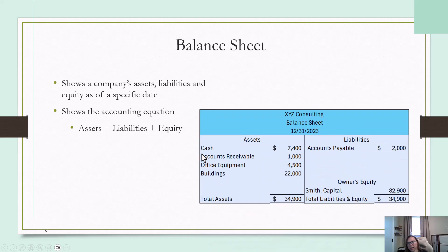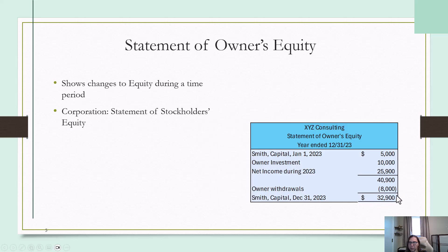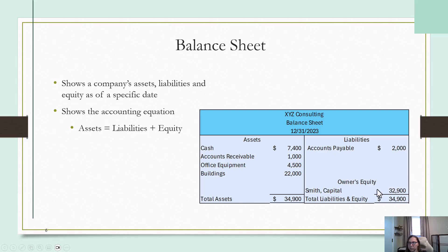This is what a balance sheet might look like. The date would say as of December 31, 2023. The assets go on the left; liabilities and equity go on the right, and you make sure the totals equal on both sides. Notice that the owner's equity is carried forward from the statement of owner's equity — it was $32,900 at the bottom, and that number carries on to the balance sheet. In practice, your statement of owner's equity information might be included directly on the balance sheet instead of having a separate statement.